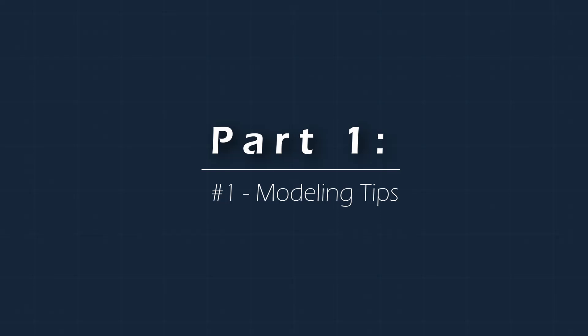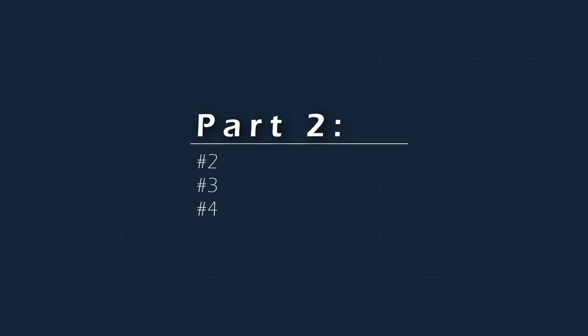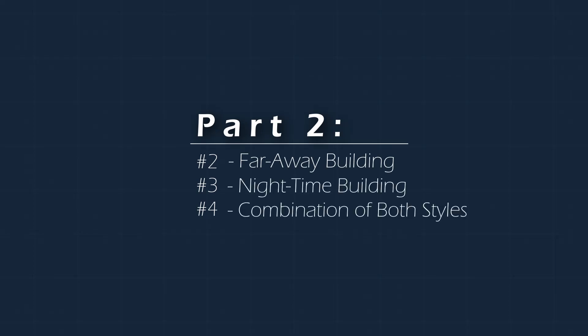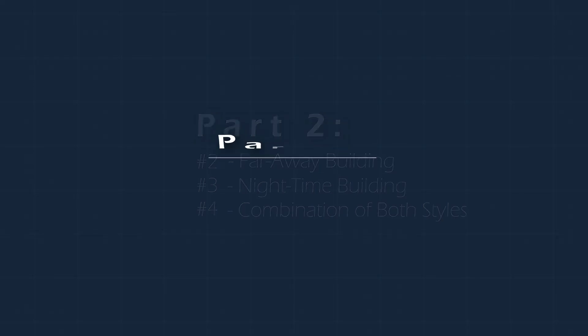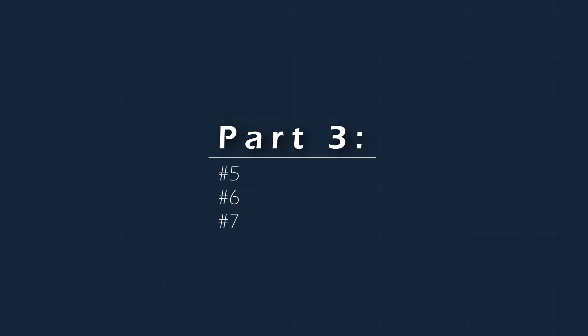This course is split into a few parts. The first part is a tutorial with tips on how to make your modeling faster and easier on your computer. The second part is split into three tutorials covering three different types of buildings: one is a far-away building, the second is a nighttime building, and the third is a combination of both — simple textures but a bit more detailed.